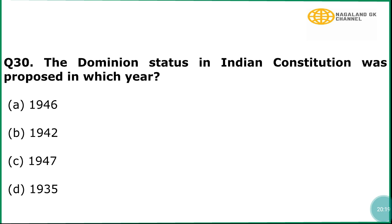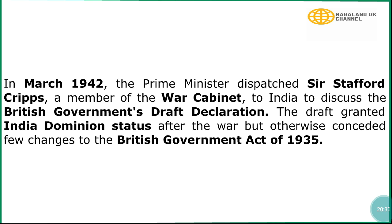Question number 30: The Dominion status in India's constitution was proposed in which year? The correct answer is in the year 1942. In explanation, in March 1942, the Prime Minister dispatched Sir Stafford Cripps, a member of the War Cabinet, to India to discuss the British government's draft declaration. The draft granted India Dominion status after the war but otherwise considered few changes to the British Government Act of 1935.